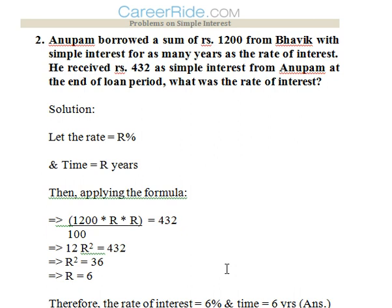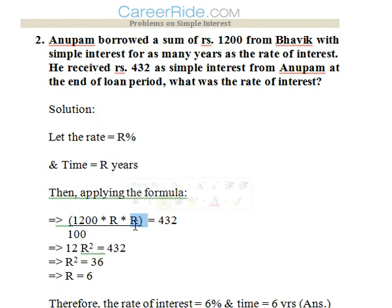Second question: Anupam borrowed rupees 1200 from Bhavik with simple interest for as many years as the rate of interest. He received 432 as simple interest from Anupam at the end of the loan period. What was the rate of interest? Since rate and time are the same, we assume rate is R percent and time is R years. Applying the formula — SI = P × R × T / 100 — we get 1200 × R × R / 100 = 432, so R² = 36, hence R = 6. The rate of interest is 6 percent and the time is 6 years.